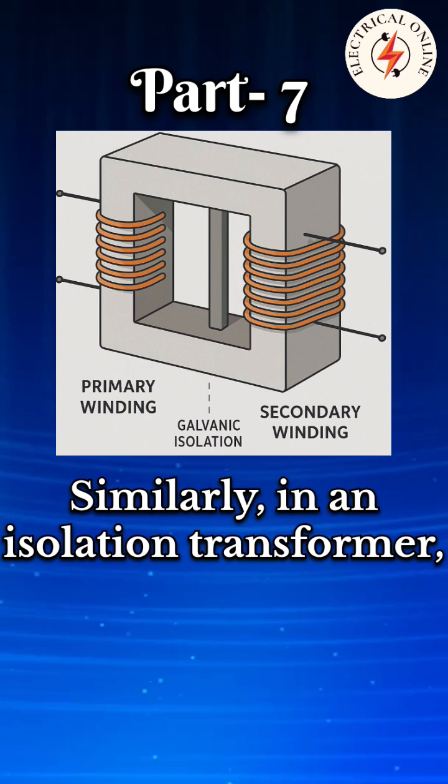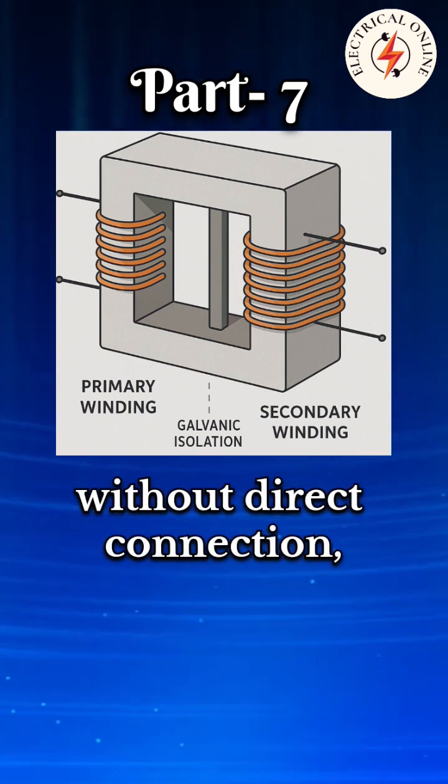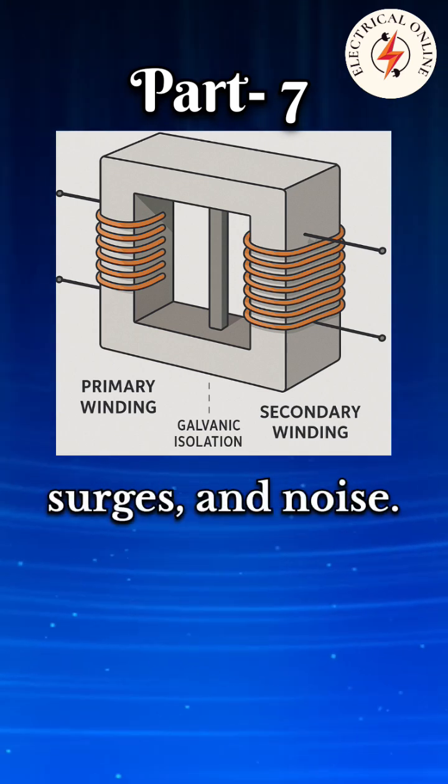Similarly, in an isolation transformer, the electrical energy is transferred without direct connection, helping protect people and equipment from electric shocks, surges, and noise.